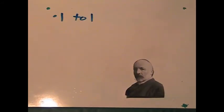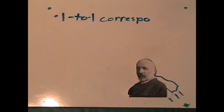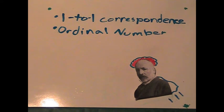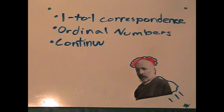Cantor also made many other mathematical discoveries. For example, he came up with one-to-one correspondence. He found ordinal numbers. He came up with the continuum hypothesis.